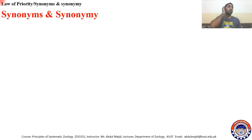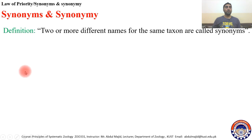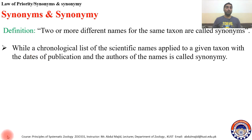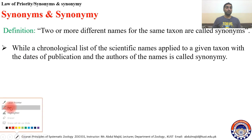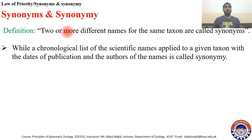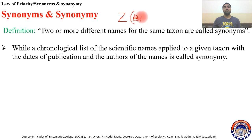Now let us talk about synonyms and synonymy. Definition: two or more different names for the same taxon are called synonyms. For example, there are two or more different names for the same taxon. Let's say we have a taxon called Z — this is a bird. This Z bird was given two, three, or four names by different scientists.